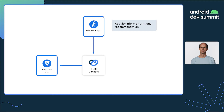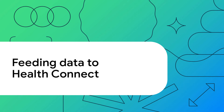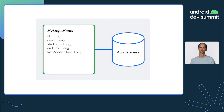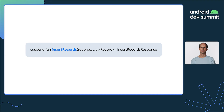Let's take a look first at feeding data into HealthConnect from your app. HealthConnect provides a convenient API to ensure both new and updated data can be written to it. We'll take an example of feeding steps data into HealthConnect from your fictional workout app. Your workout app has its own database and steps data is represented using the MyStepsModel class shown. We're going to use the InsertRecords method to perform the writing, which simply takes a list of records and writes them to HealthConnect.